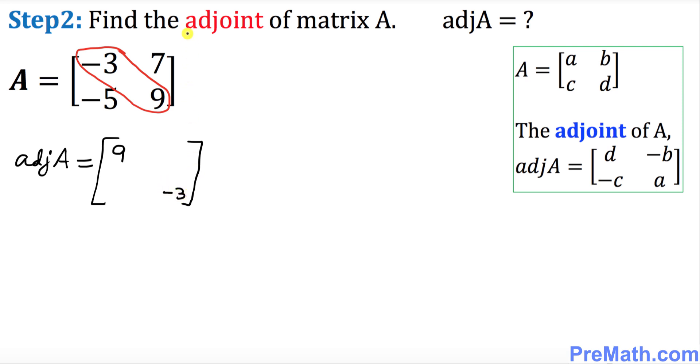And as far as these two numbers are concerned, you do not swap them, you just change their signs only. So seven becomes negative seven and negative five becomes positive five. So this seven is going to become negative seven and this simply becomes positive five.